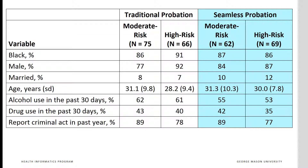The offenders in our study are substance abusers with extensive criminal justice histories. Clients in this study were randomly assigned to seamless and traditional probation. By seamless, we also mean co-located, where treatment and probation are seen at the same place. This table shows the average characteristics of the clients.